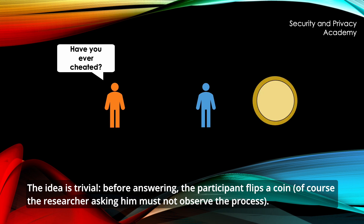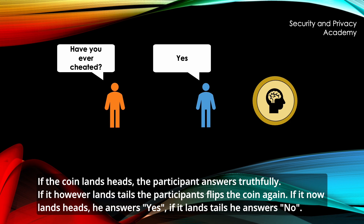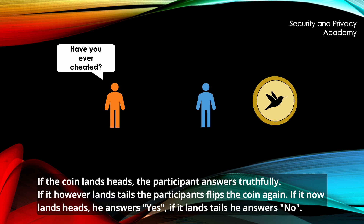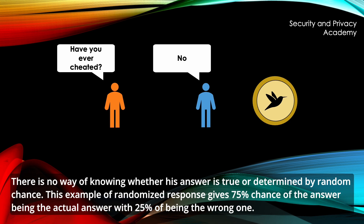The researcher asking must not observe the coin flip process. If the coin lands heads, the participant answers truthfully. If it lands tails, the participant flips the coin again. If it now lands heads, they answer yes; if it lands tails, they answer no. There is no way of knowing whether the answer is true or determined by random chance. This example of randomized response gives a 75% chance of the answer being the actual answer, with a 25% chance of it being wrong.